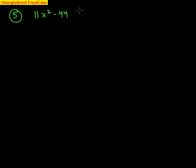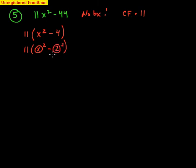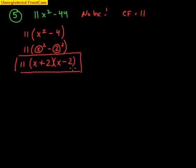Next problem: 11x squared minus 44. There is no bx term, so I'm thinking difference of perfect squares. However, 44 and 11 are not perfect squares by themselves, but there is an a, so look for a common factor. Yes — 11 is the common factor. Pull it out: 11 times (x squared minus 4). Now x squared is x squared, and 4 is 2 squared. With 11 still out front, two parentheses with different signs: (x plus 2)(x minus 2). That's the factored form.